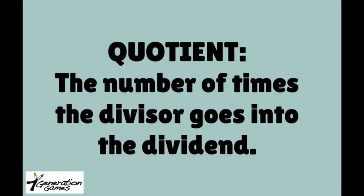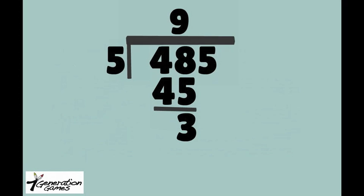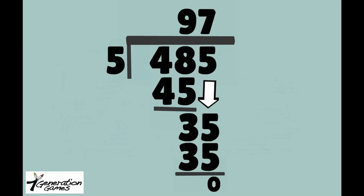The quotient is the number of times the divisor goes into the dividend. Going back to 485 divided by 5: 5 goes into 48 nine times, giving you 48 minus 45, leaving you 3. Bring down the 5 for 35. Then 5 goes into 35 seven times. 35 minus 35 is 0. So your answer to how many times 5 goes into 485, or the quotient, is 97.